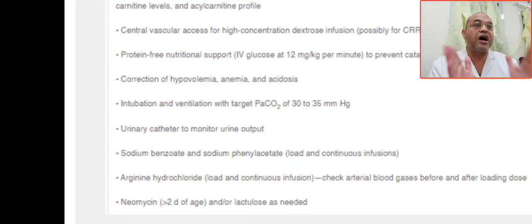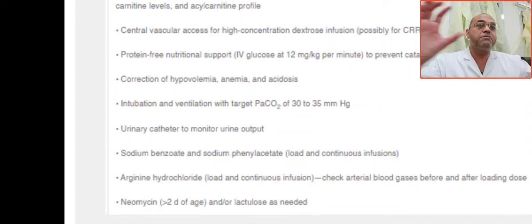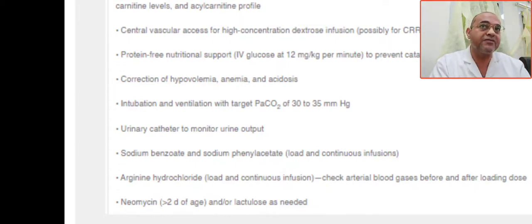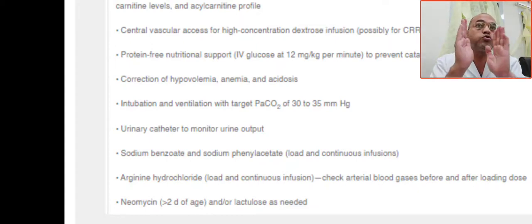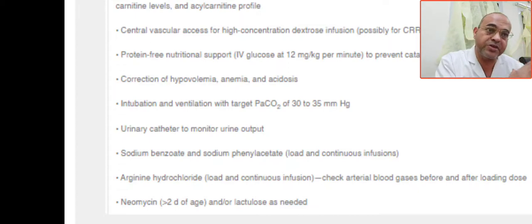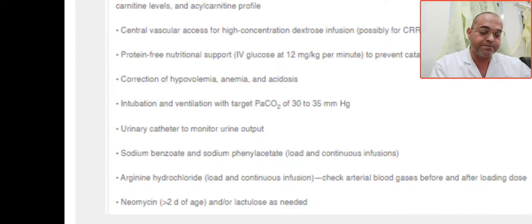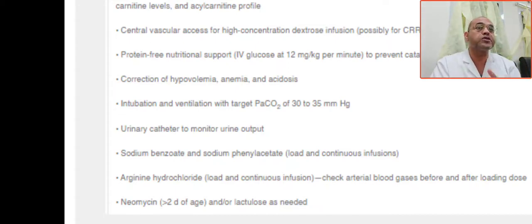In summary, to treat hyperammonemia: ABC first — secure the airway, breathing, and circulatory insufficiency. Intubate the patient; the goal of mechanical ventilation is to produce mild respiratory alkalosis, keeping PCO2 between 30 to 35 mmHg. Monitor the patient clinically, biochemically, and with urine output monitoring.